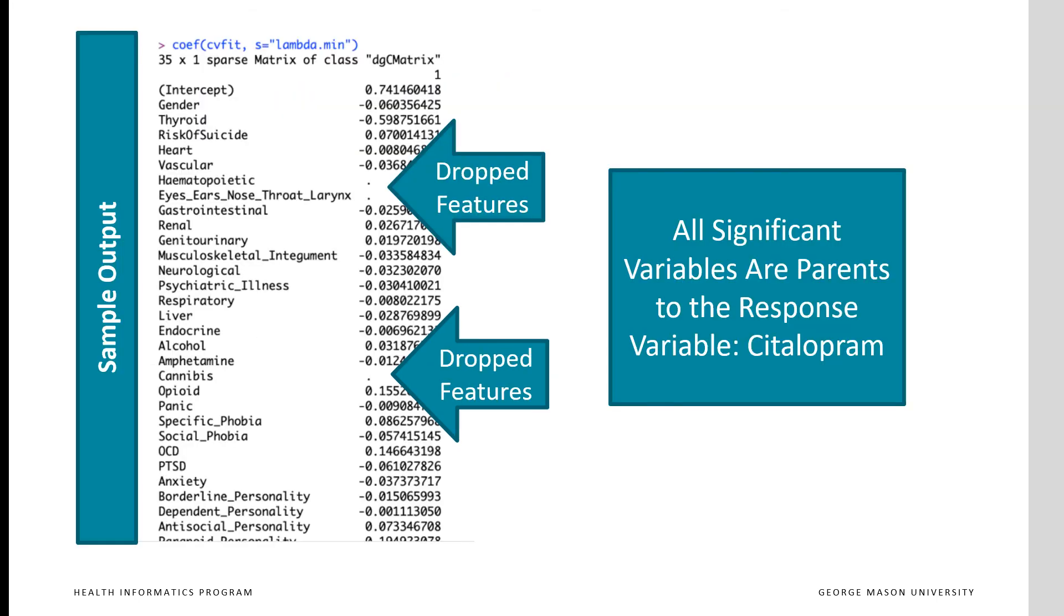Here is the sample output you will get from LASSO regression. The periods indicate the variables that have zero regression coefficients. These have been dropped. As lambda increases, you see more of these dotted variables. This output is for minimum lambda and you can have a more parsimonious model at lambda of one standard error higher than the minimum.